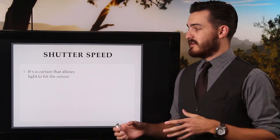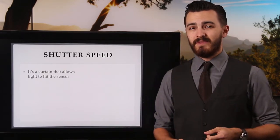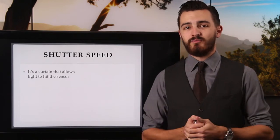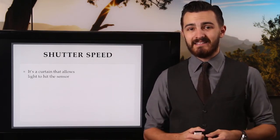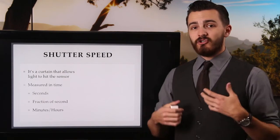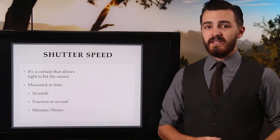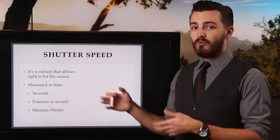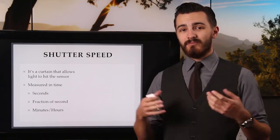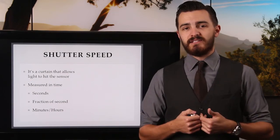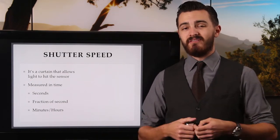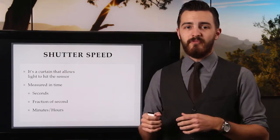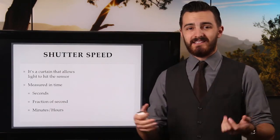The shutter is just a curtain that allows light to hit the sensor. It basically blocks the sensor at all times and then moves out of the way when the camera's ready to take a photo so it can start collecting light. However long that curtain's open is the shutter speed, and that's measured in time — fractions of a second, multiple seconds, multiple minutes, even multiple hours. The longest photo I've ever taken is 30 minutes; the longest I've seen online is 11 hours.